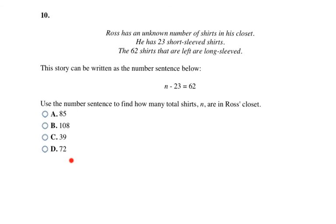So you can try each of these numbers. You can take 85 minus 23, 108 minus 23, 39 minus 23, and 72 minus 23, and see which one's going to give you the right answer that you're looking for in this problem of 62. Or you can do opposite operations. So since this is a minus 23, I'm going to add it to both sides. So that means 62 plus 23 is 85. That's going to make A my final answer.